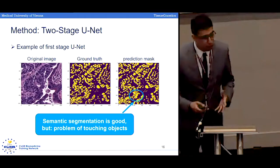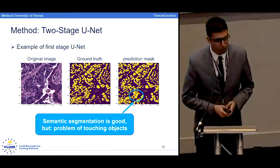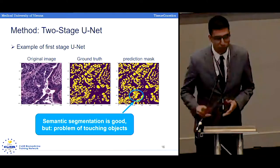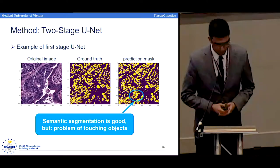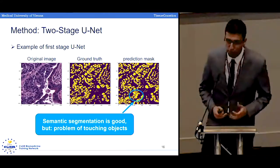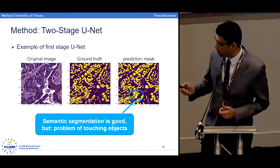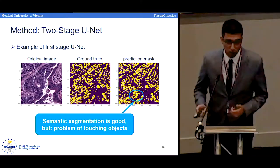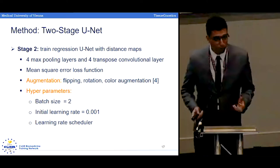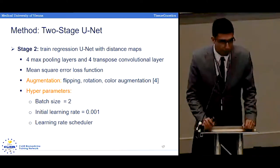After training the first stage UNet model, we can get a result like this. On the left you can see the original image, in the middle we have the ground truth, and on the right we have the prediction results by this UNet. The general semantic segmentation performance of the method is quite good. But as you can see, we have the problem of touching objects. To solve this problem, we train another UNet with a very similar structure to the first stage UNet.